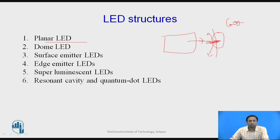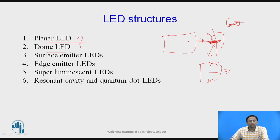In the dome-shaped LED, the light is also incident at the center only. As we move away from the center, the intensity of light reduces. Dome-shaped LEDs are used in home applications most of the time.